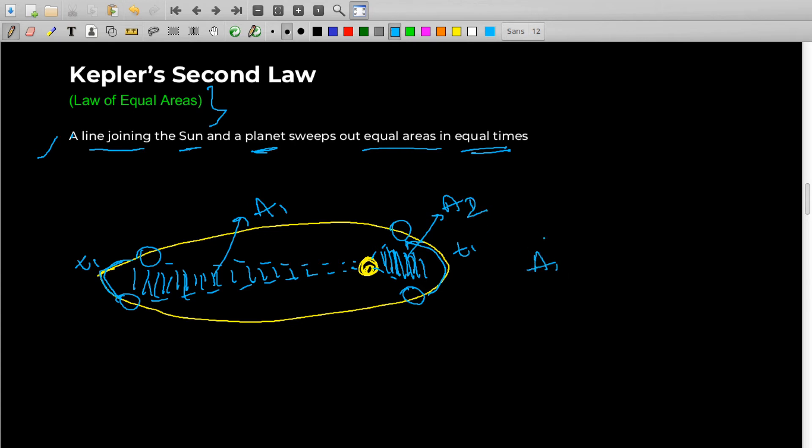Here the area is less as you can see because it's long. So this will be a1 and this will be a2. And as t1 is equal to t1, then a1 will be equal to a2. That is basically it. The thing we derive from this law is planet moves faster when it is closer to Sun.